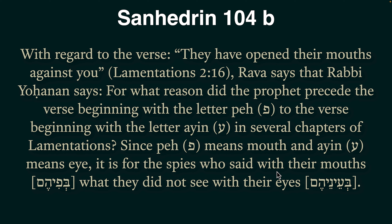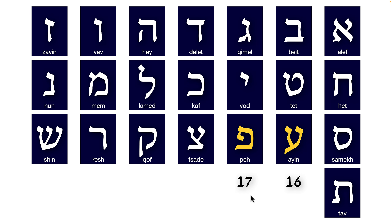So essentially what they're saying is: you utter something before you see. Peh before Ayn means mouth first, eye next. The natural order should be Ayn then Peh — you see first, then you open your mouth. When Ayn and Peh are reversed, it means they opened their mouth before they saw, or said what they did not see. That's the point — the spies did not give the right testimony.